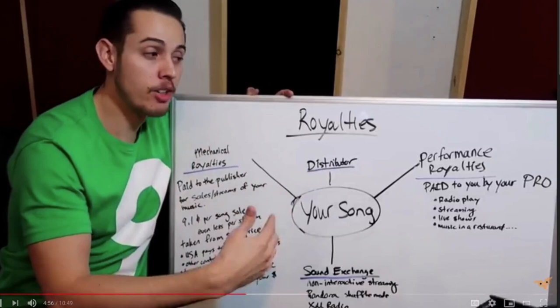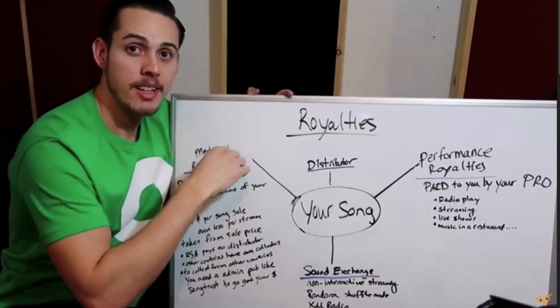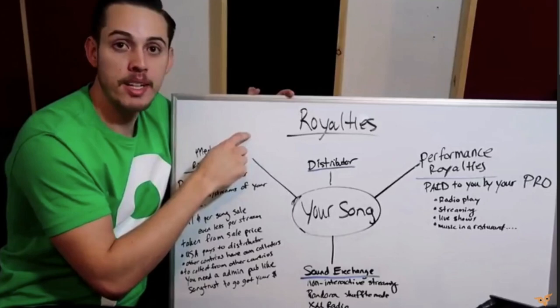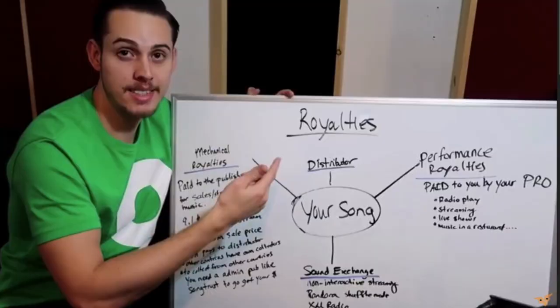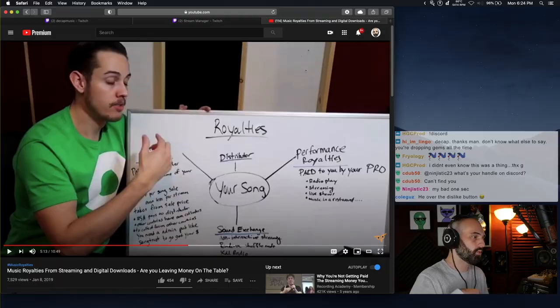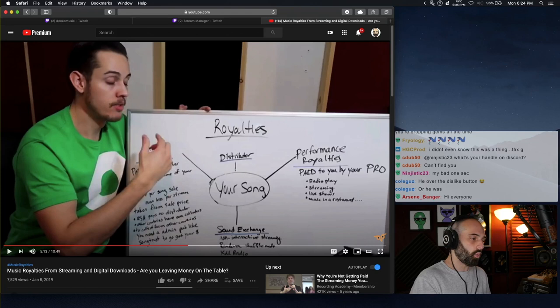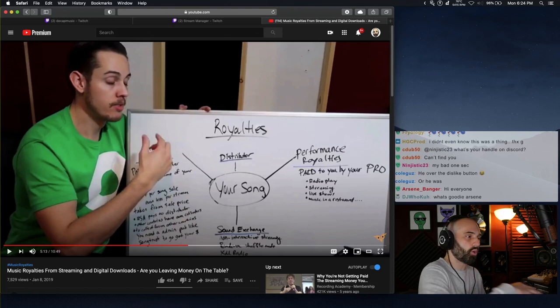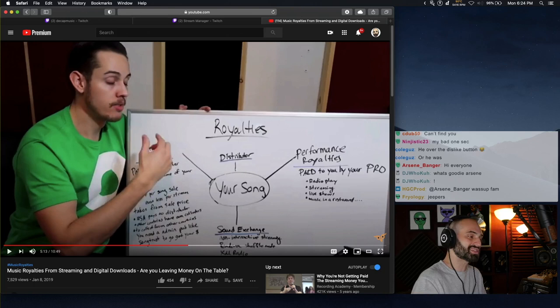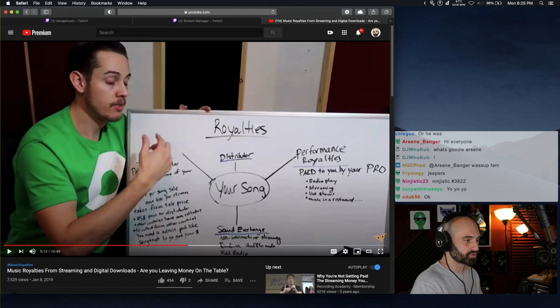Whether that's worth it depends on how many sales you're making overseas. If you make 100 sales in Germany at 9.1 cents per sale, that's $9.10 total. Your US mechanical royalty is included in your DistroKid payout, but when you sell music overseas they hold your mechanical royalty as required by law. You need a publishing administrator to collect those overseas mechanical royalties.